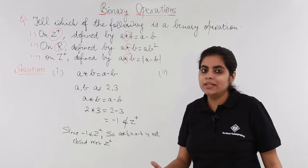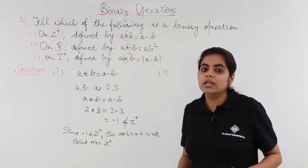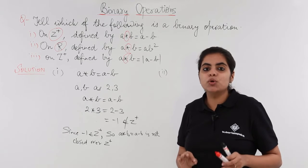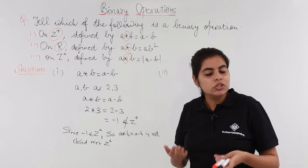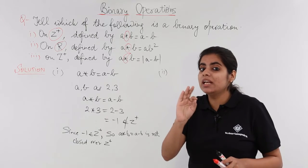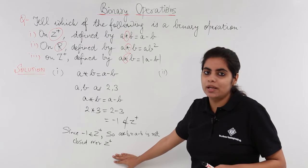Every other example you would take would prove it correct only. So that is the funda, basic funda of proving anything that if you want to prove something to be correct, just generalize. But if you want to prove something to be incorrect, just quote any one example where it is not valid.